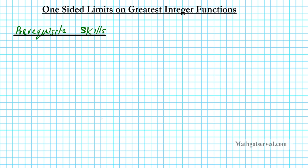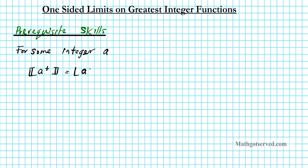You need to know how to find the greatest integer of integers and non-integers. For some integer a, the greatest integer function of a — approaching a from the right — can also be written as the floor of a number. The floor of any integer, if you're approaching the integer from the right, is simply that integer itself.